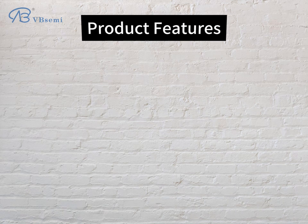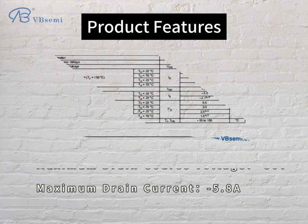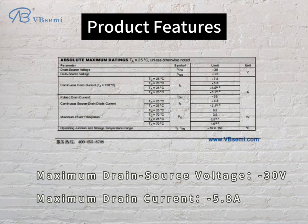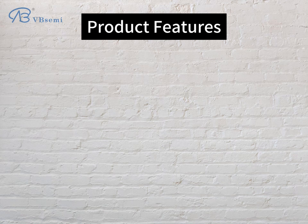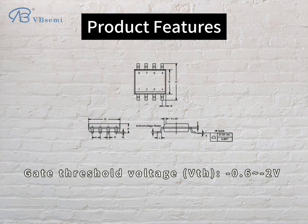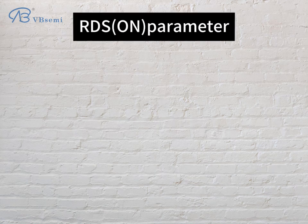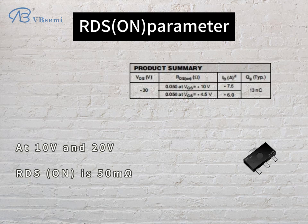Product Features: Maximum drain-source voltage -30V, maximum drain current -5.8A, gate threshold voltage VTH 0.6-2V. RDS(on) parameter: at 10V and 20V, RDS(on) is 50mΩ.